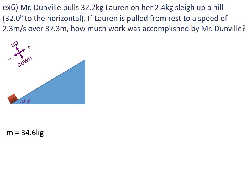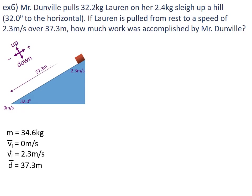If Lorne is pulled from rest — so initial velocity is 0 metres per second — to a speed of 2.3 metres per second, that is our final velocity. Over 37.3 metres — that is the displacement going up the hill on a 32-degree angle. How much work was accomplished by Mr. Dunville?